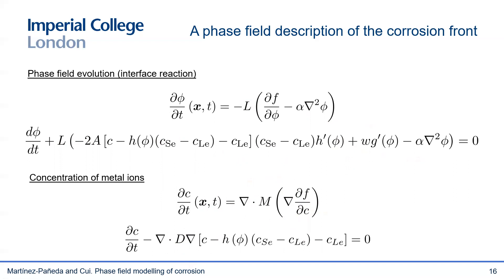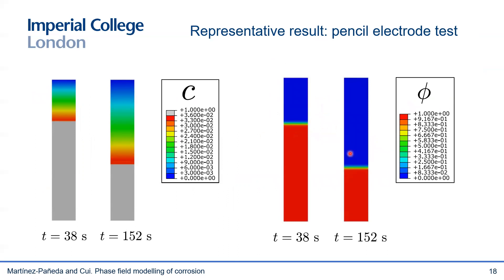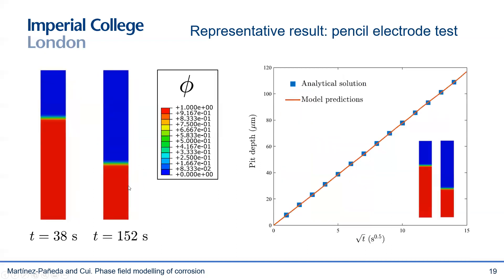I will not get into details of the finite element implementation for the sake of time. Those details are provided in our GMPS paper, and I've also released the code on my website — a user element subroutine to implement it into Abaqus. Let me show some representative numerical results. This is a classic benchmark test known as the pencil electrode test. The problem is essentially one-dimensional — a metallic bar corroding uniformly — and there are both experimental data and analytical solutions for the case of diffusion control corrosion. On the right is the evolution of the corrosion front as given by the phase field, and on the left is the distribution of metal ions. You can see the prediction against the analytical solution for pit depth versus time, and we get a perfect agreement.